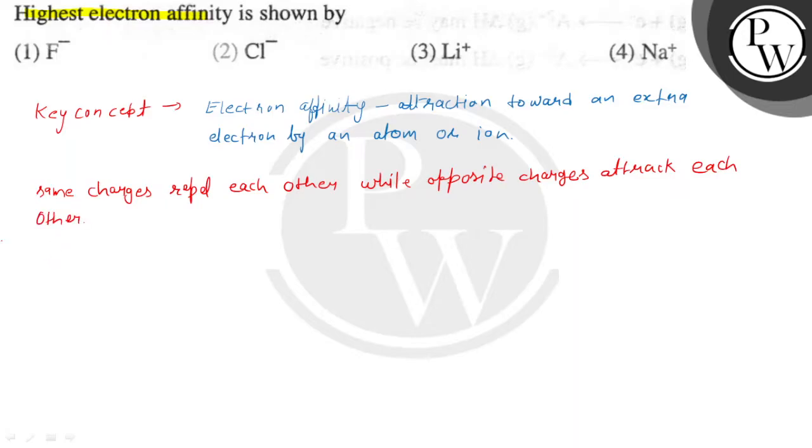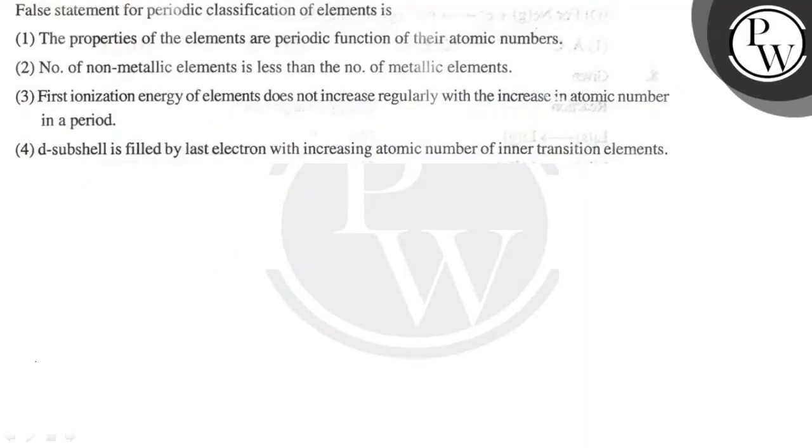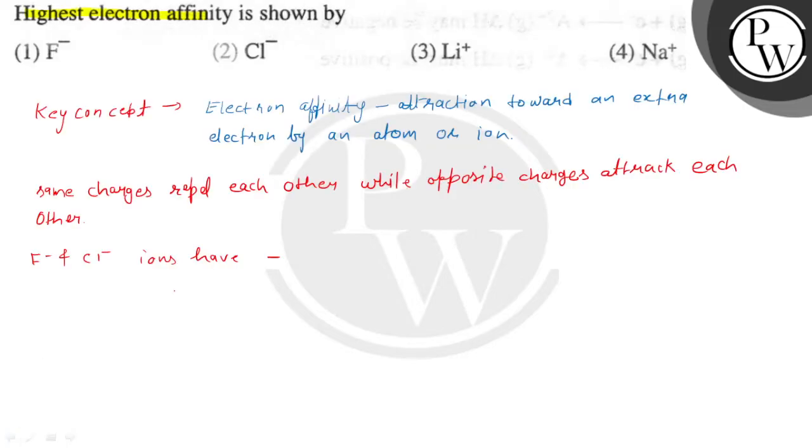According to this concept, the first two options F⁻ and Cl⁻ have negative charge. So F⁻ and Cl⁻ have negative charge, and electrons also have negative charge.